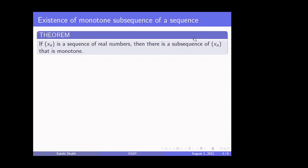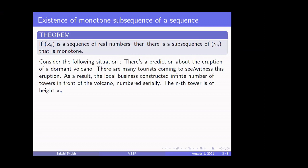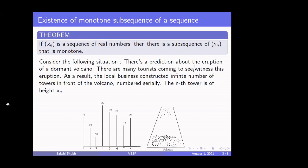Before starting the rigorous proof, consider this situation. Suppose you have been given a sequence xn — keep the terms of the sequence in mind. Suppose there is a prediction about the eruption of a dormant volcano, and obviously there will be many tourists coming to see this eruption. As a result, the local businesses constructed an infinite number of towers in front of the volcano at a certain distance. Constructing an infinite number of towers is hypothetical, but suppose they have done so. We can visualize this: there is a sequence of towers and this is the dormant volcano whose eruption is predicted. She attended recently level O of batch two in MTTS 2021.